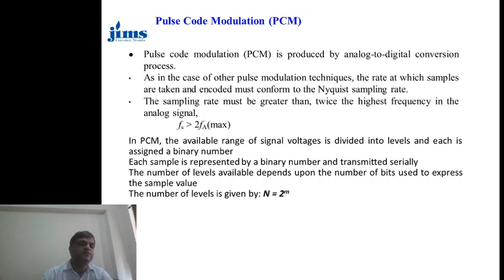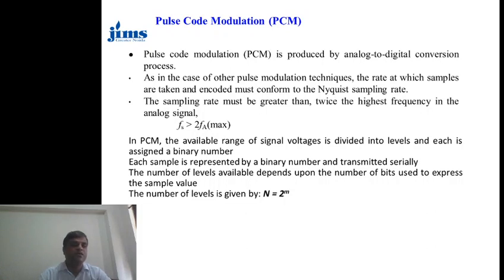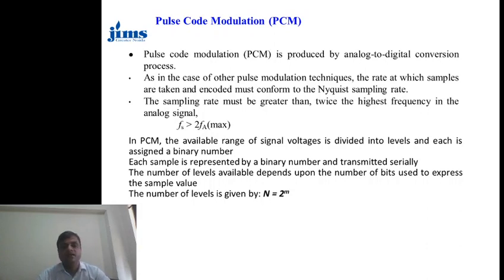In short, if we write FS greater than twice FA, where FS is the sampling frequency and FA is the maximum frequency component of the analog signal. Similarly, in general terms, in the PCM signal, the voltage is divided into levels and each level is assigned a binary number.